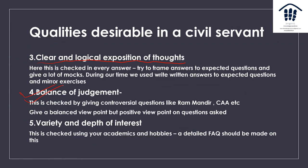Balance of judgment is checked by giving controversial questions like Ram Mandir, CAA, or asking your opinion about corruption or a political leader. Always give a positive but balanced view. Even if asked about CAA, talk about the fact that it was a long-standing demand and India has always been a home to refugees and various minorities. Do not go into controversial aspects unless they point them out.